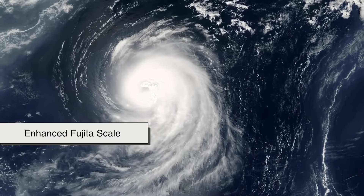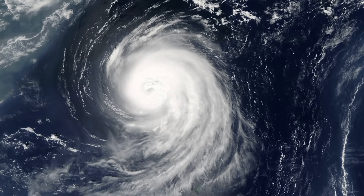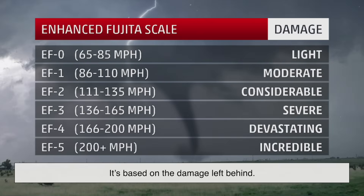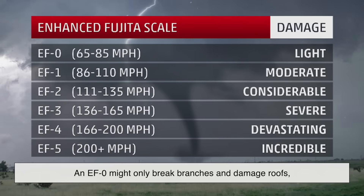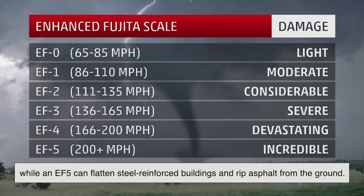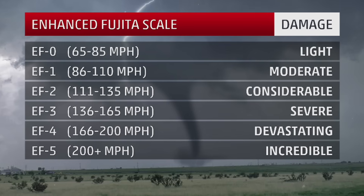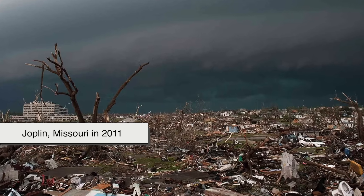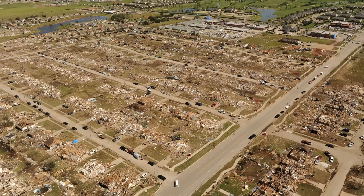Meteorologists use something called the Enhanced Fujita Scale to measure tornado strength. Instead of measuring the wind directly — which is nearly impossible during the chaos — it's based on the damage left behind. The scale runs from EF-0 to EF-5. An EF-0 might only break branches and damage roofs, while an EF-5 can flatten steel-reinforced buildings and rip asphalt from the ground. These powerful twisters are rare, but when they strike, their impact can last generations. Entire towns in the United States, like Joplin, Missouri in 2011, or Moore, Oklahoma in 2013, have seen firsthand the catastrophic power of these storms.